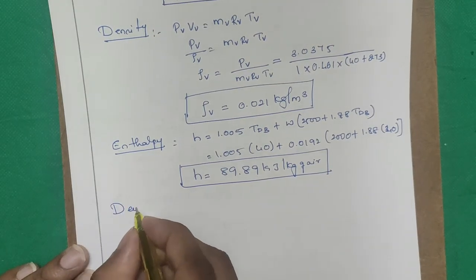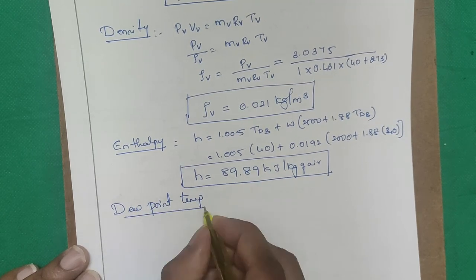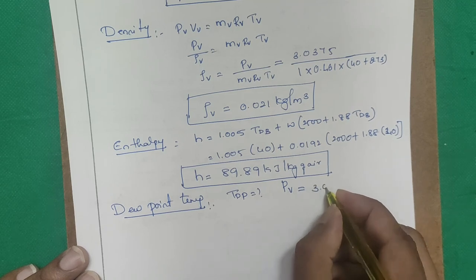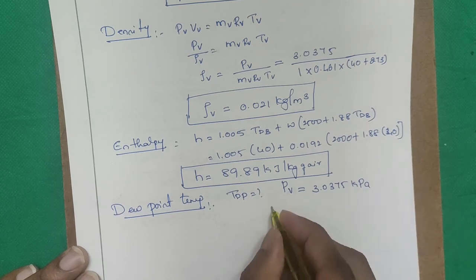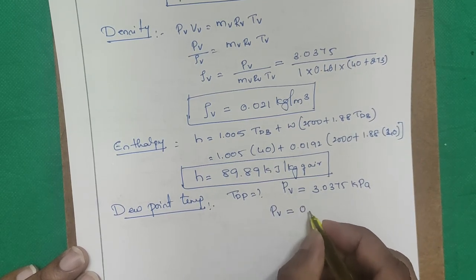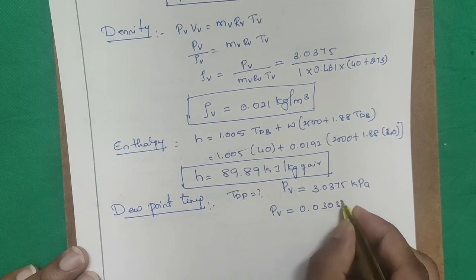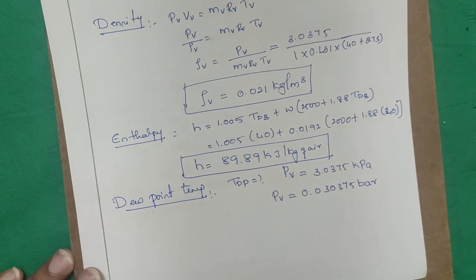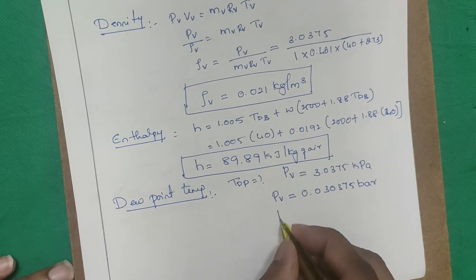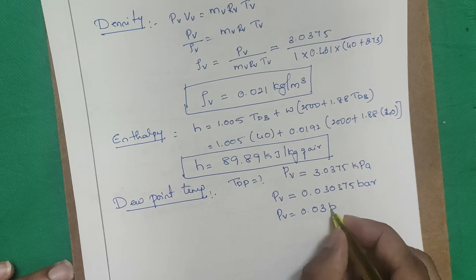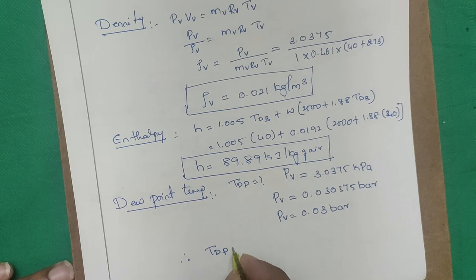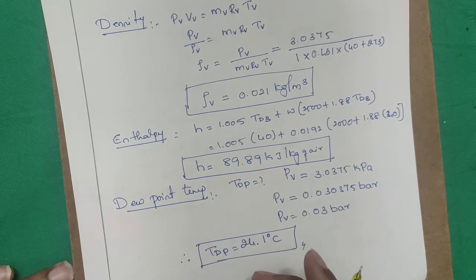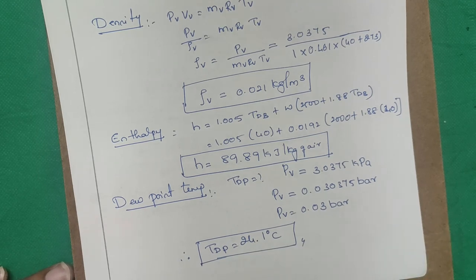Step 7 — Dew point temperature: PV = 3.0375 kPa = 0.030375 bar ≈ 0.03 bar. From the steam table pressure table at 0.03 bar: dew point = 24.1°C. This completes the psychrometry problems solved without a psychrometric chart. Next class we will use the psychrometric chart. Thank you.